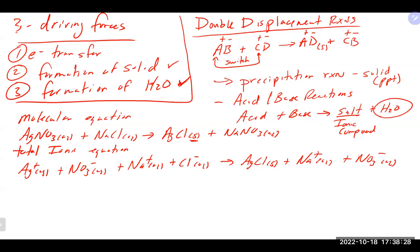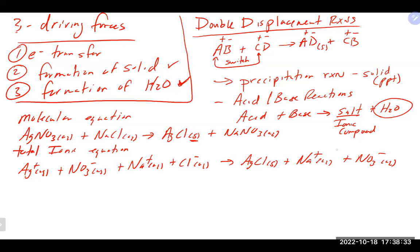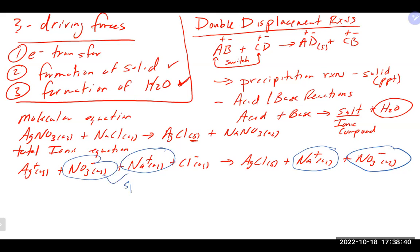In the total ionic equation, you should find some ions that are the same on both sides — these are spectator ions. In this case, sodium and nitrate are the same on both sides. They are there to balance charge but are not forming the main product. We cancel them out on both sides, which gives us our net ionic equation.